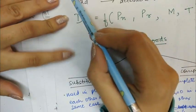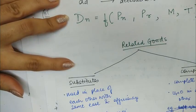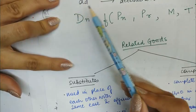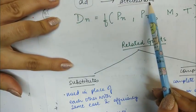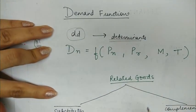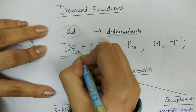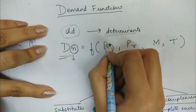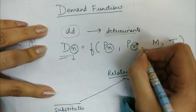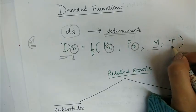The demand function expresses a functional relationship between demand and its determinants. It tells us how demand depends on those determinants. The demand for a commodity N is dependent on the price of commodity N, the price of related goods, the income of the consumer, and the tastes and preferences of the consumer.